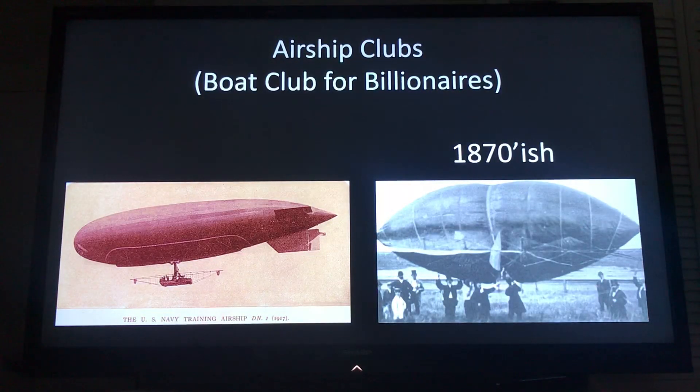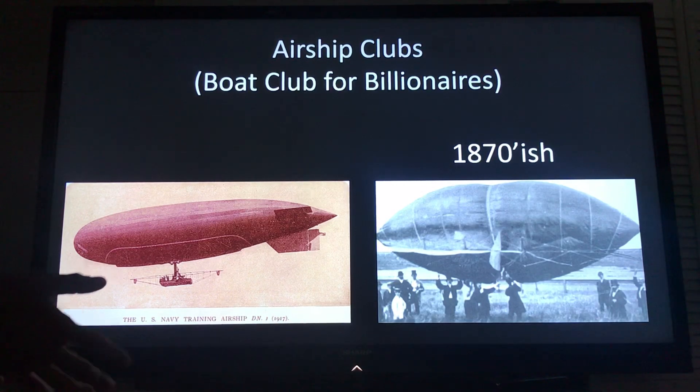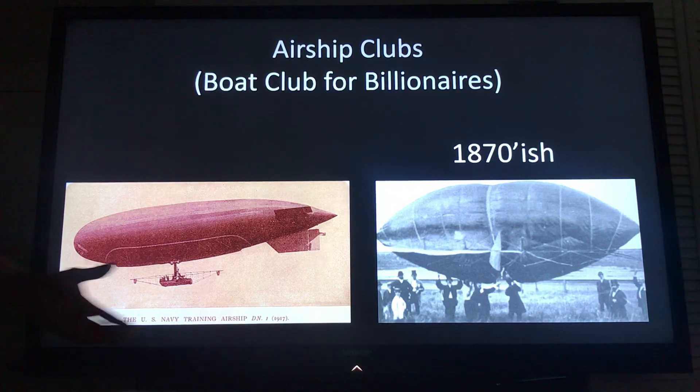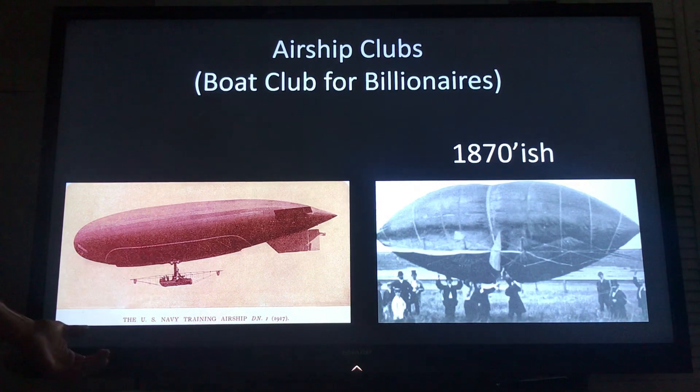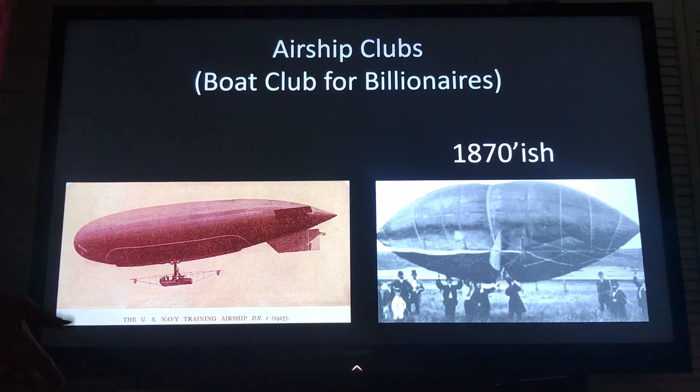And so now we're gonna switch over to talk about airship clubs. Basically airships have been around since a long time, basically just giant helium balloons. In the 1870s this one was designed and the easiest way to think of an airship club is that it's like a boat club but for billionaires and they've been around for hundreds of years. So you've got electrogravitics which has been around for over a hundred years now and you have airship clubs which have been around for a couple hundred years.